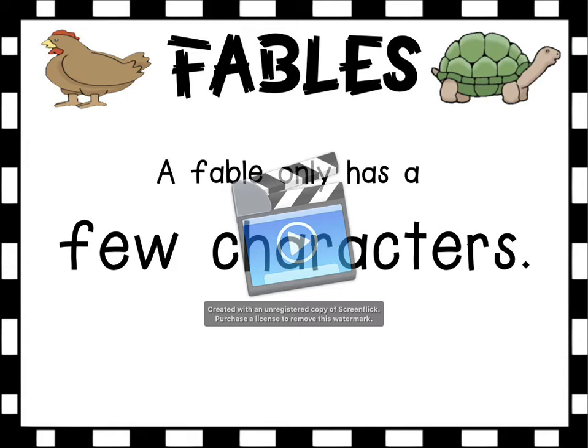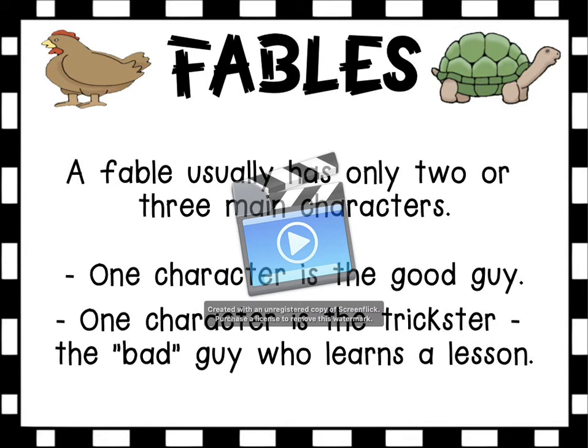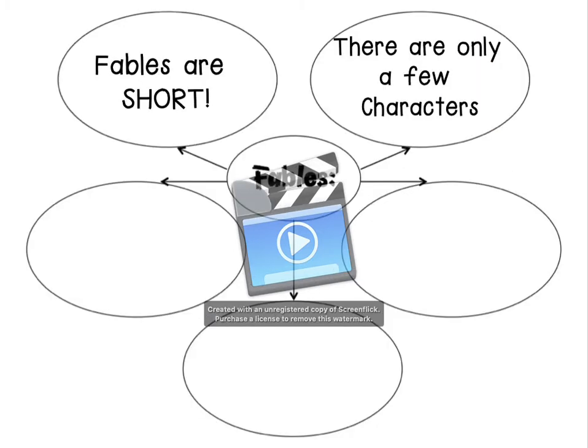A second characteristic is that a fable only has a few characters — usually two or three main characters. Usually one character is the good guy and one character is the trickster, or the bad guy, or the foolish one who learns a lesson. There's not always a bad guy and there's not always a good guy; sometimes there's only one character — it just depends on the fable. Go ahead and add that there are only a few characters.